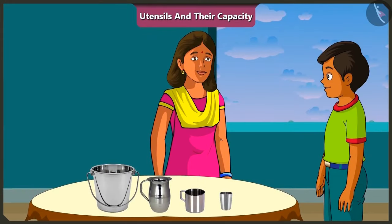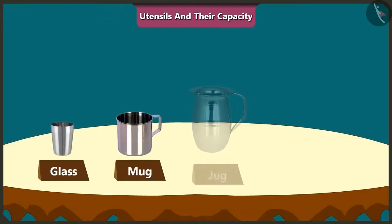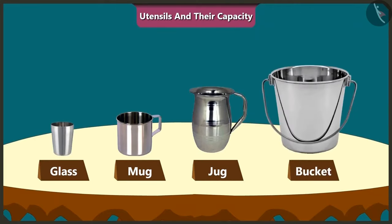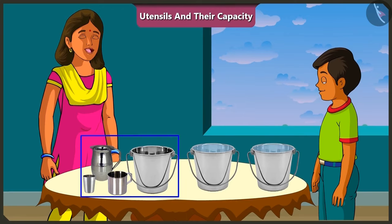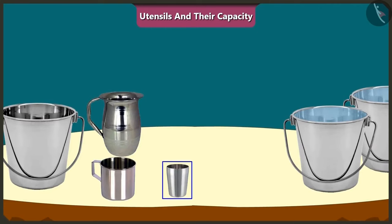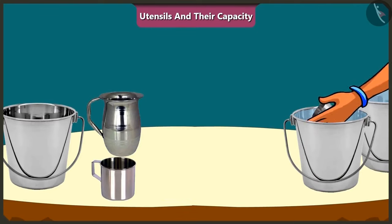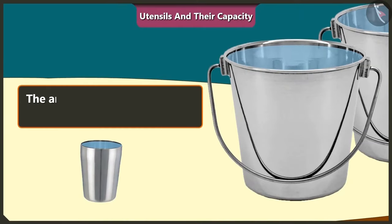Which vessels and their capacities are we going to find today? Today we will find the capacity of this glass, mug, jug, and this bucket. We will use this water to find the capacity of all these vessels. First of all, I will fill this glass completely with water. The amount of water in this glass is its capacity.